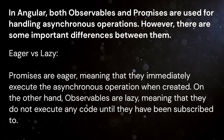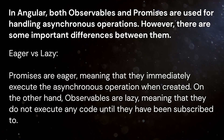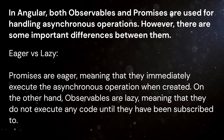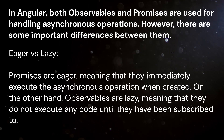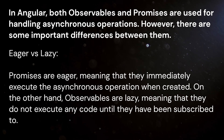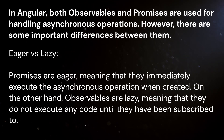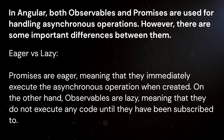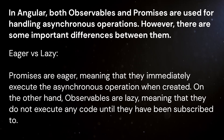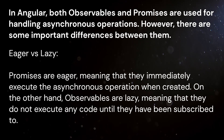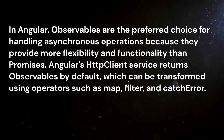Eager vs. Lazy: Promises are eager, meaning that they immediately execute the asynchronous operation when created. On the other hand, observables are lazy, meaning that they do not execute any code until they have been subscribed to.